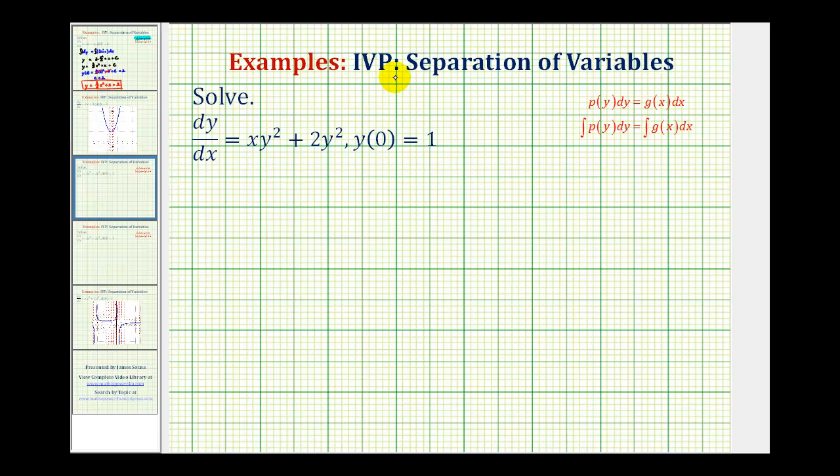We want to solve the given initial value problem using the technique of separation of variables. We have dy/dx equals xy squared plus two y squared, and y of zero is equal to one.